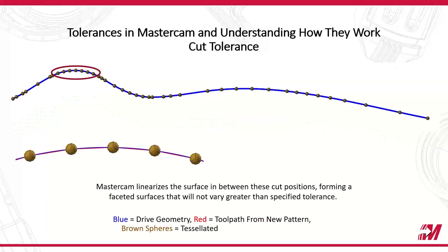If you tighten up that tolerance, you're going to get a lot more points. Taking that same type of path with only a cut tolerance applied — at 1/10,000th of an inch tolerance — you can see significantly more points. The red geometry is still deviating a little bit from it, but much tighter around that curve. The only way to get more true to the shape is to tighten up that cut tolerance. Arc filter and smoothing settings are going to modify those points — modify the input that is being created by the cut tolerance. The cut tolerance drives everything else.